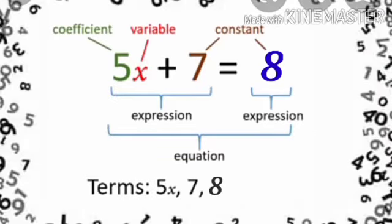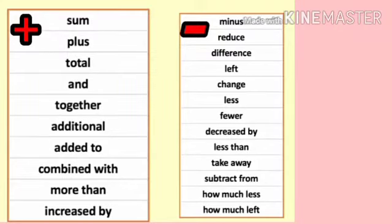5x plus 7 equal to 8 is called an algebraic equation. The equality sign shows that the value of the expression to the left of the equal-to sign is equal to the value of the expression to the right of the equal-to sign. Now let's recall the words commonly used to represent the operations of addition, subtraction, multiplication, division, equal-to sign, and so on.